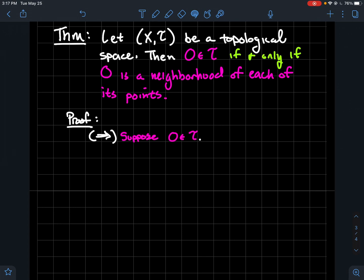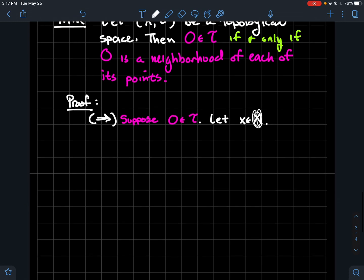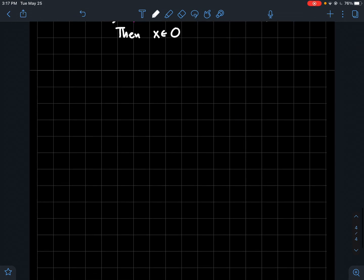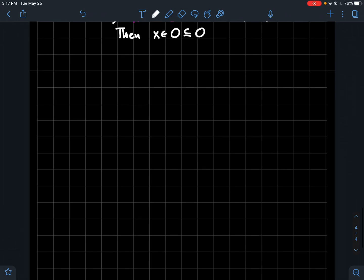So let's go the forward direction. Let's suppose that O is in T. So let's suppose O is an open set. Let's let x be in O. And we need to show that that O is a neighborhood of this particular x. Alright, so then x is in O, which is contained in itself. And so that shows that O is a neighborhood of x, right? So O itself contains some open set. Remember, we assumed O is in the topology. That was kind of the easy direction. So let's go the other way.